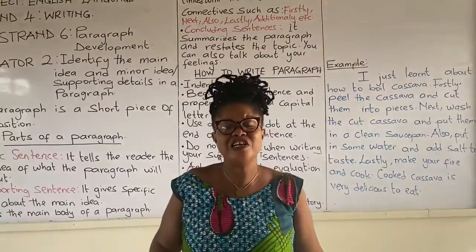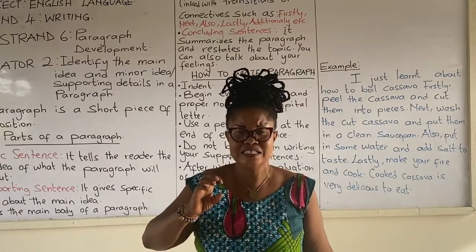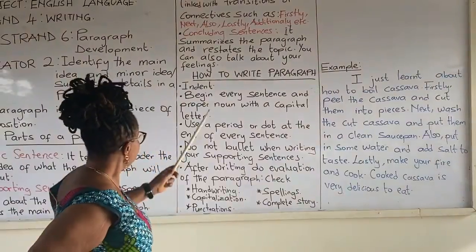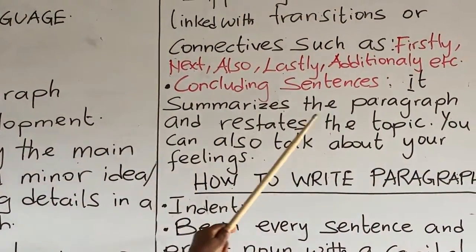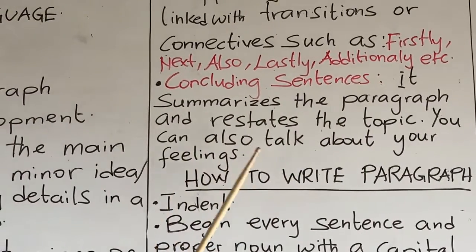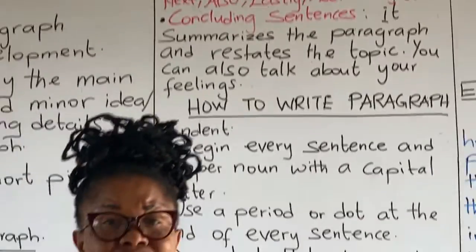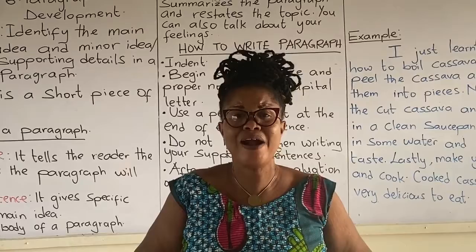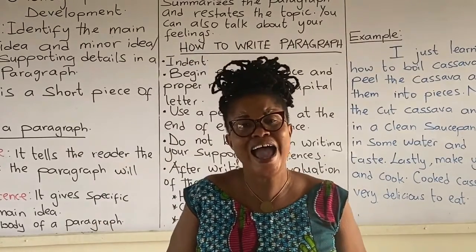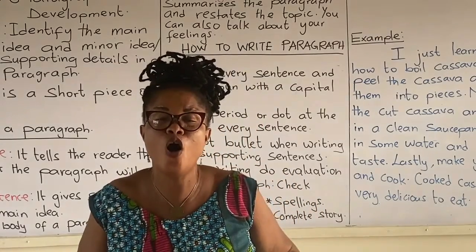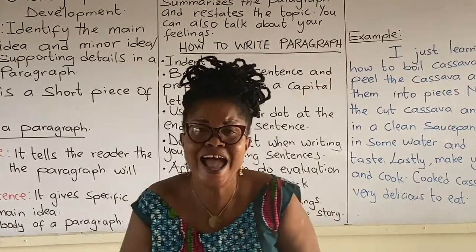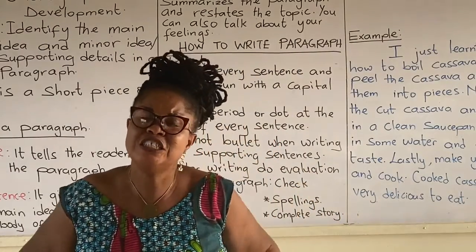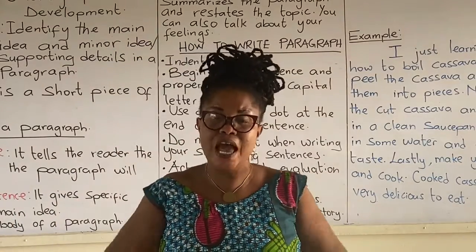The last part of a paragraph is the concluding sentence. A concluding sentence summarizes the paragraph and restates the topic. You can also talk about your feelings. For instance, if you are writing about your school, you can say: 'I like my school because it is the best of all schools.' That would be your concluding sentence.